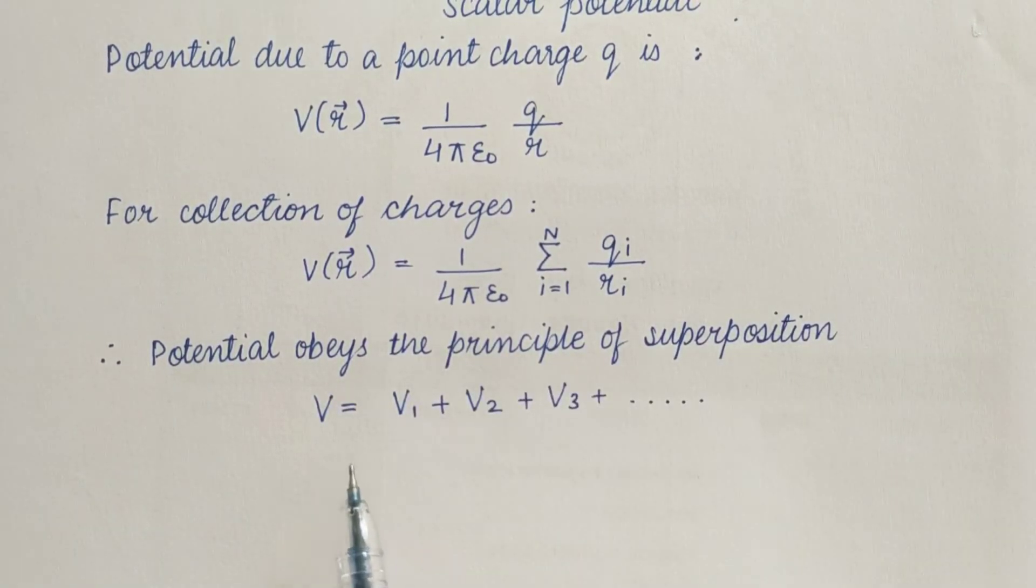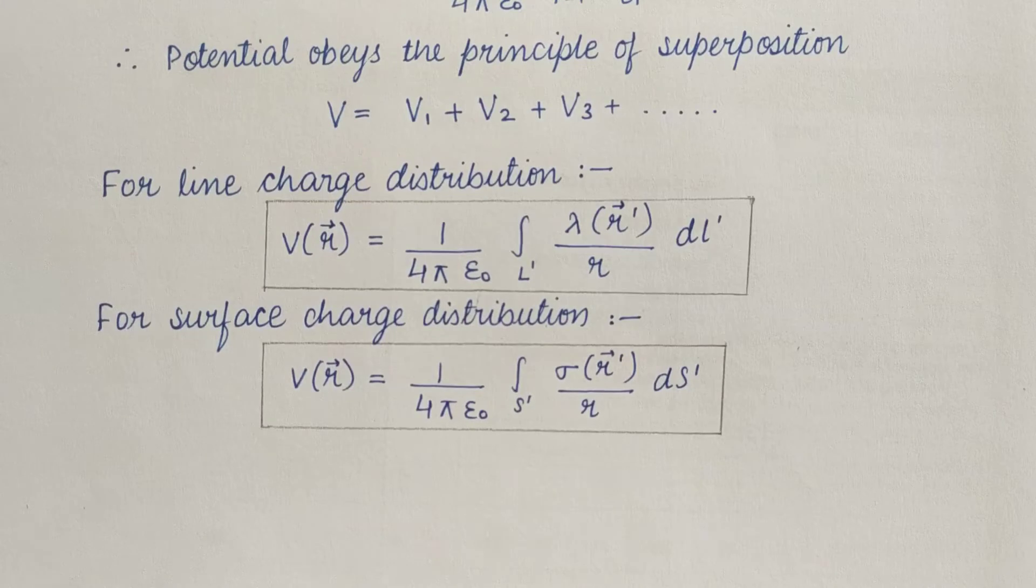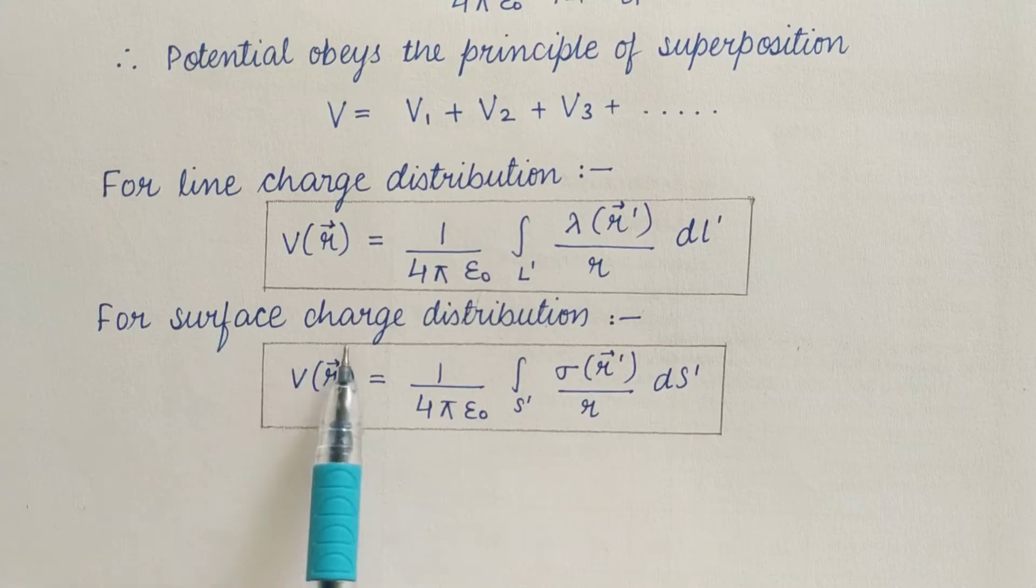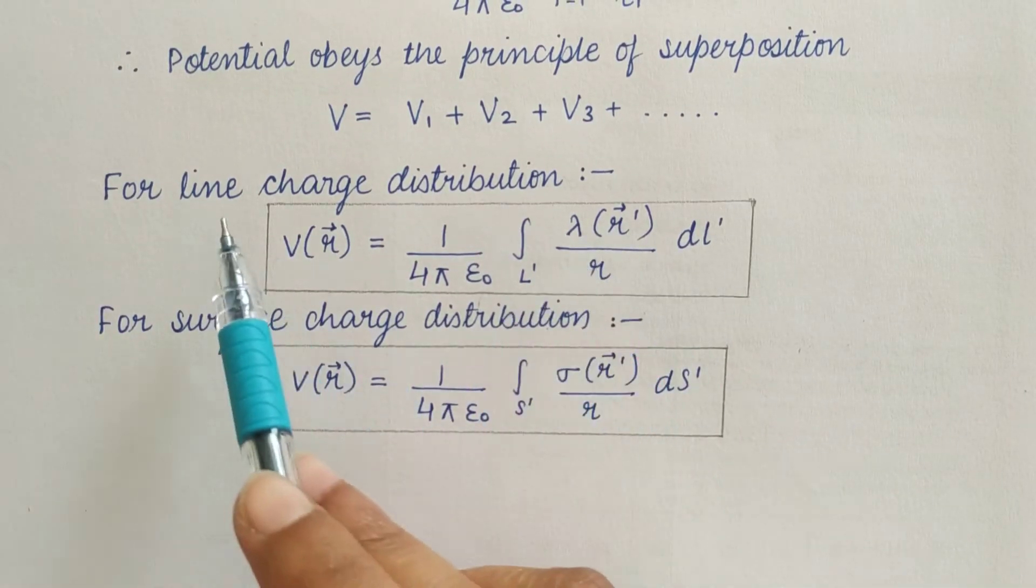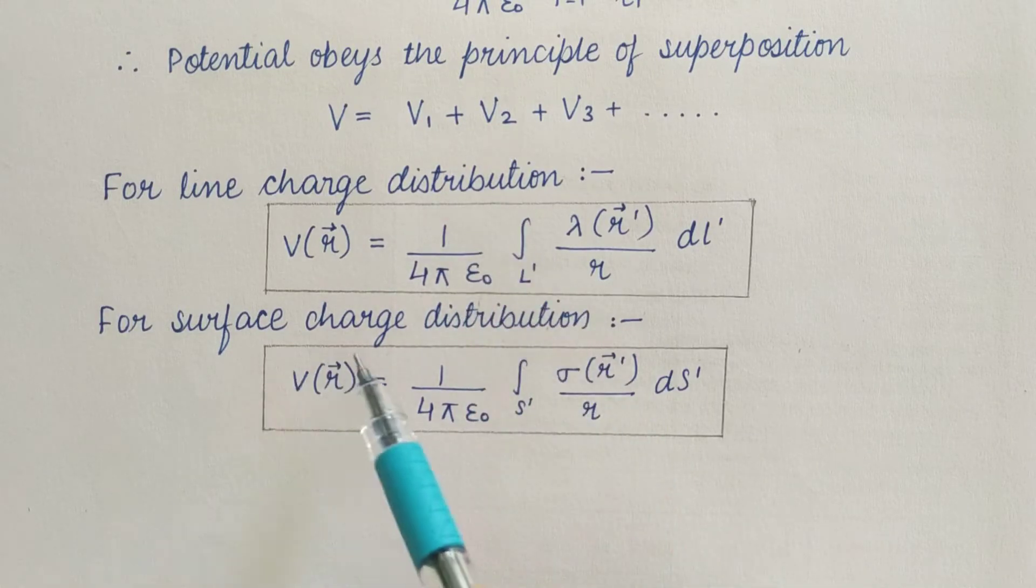If you remember, we use lambda for line charge distribution and sigma for surface charge distribution. This potential is for line charge distribution and this potential is for surface charge distribution. Here dl dash is line element and ds dash is surface element.